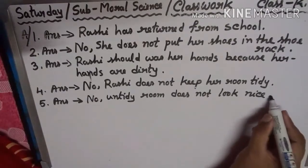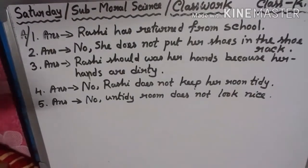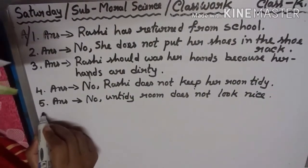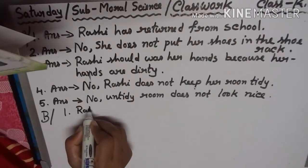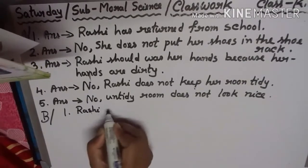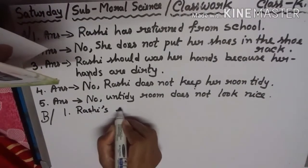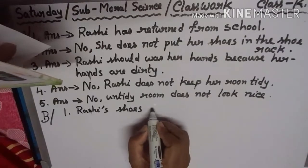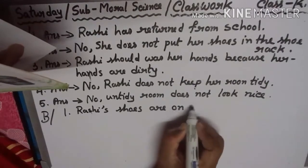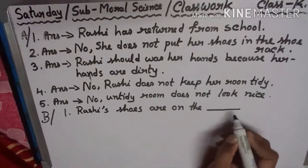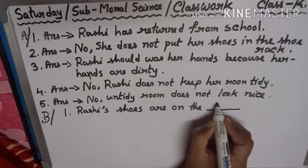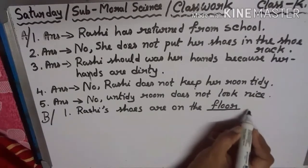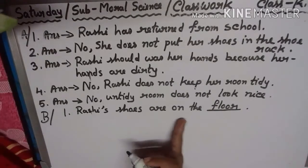Next, fill in the blanks, Section B. Number 1: Rasi's shoes are on the — children, tell me the answer. On the floor. Yes, Rasi's shoes are on the floor.